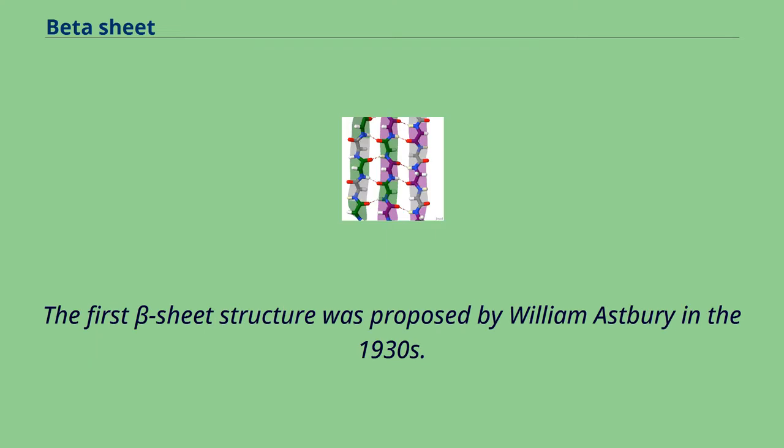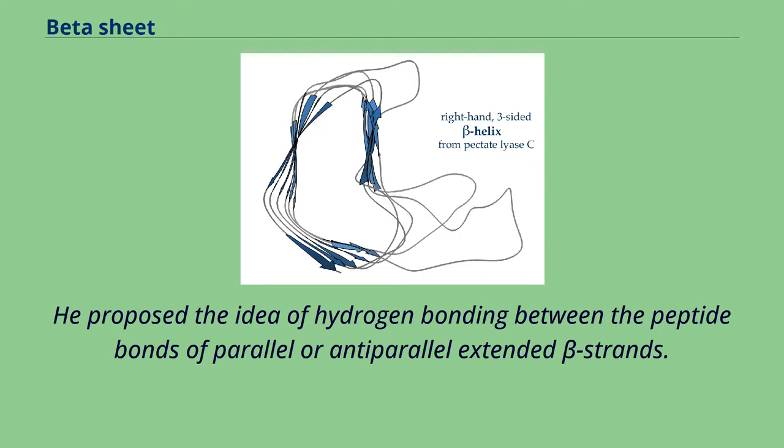The first beta sheet structure was proposed by William Asperry in the 1930s. He proposed the idea of hydrogen bonding between the peptide bonds of parallel or anti-parallel extended beta strands.